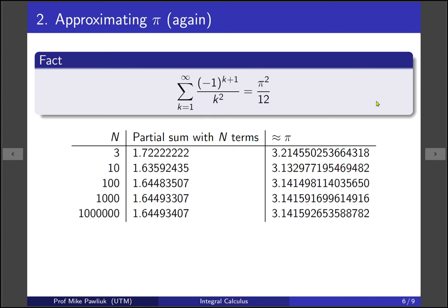So just like in the last case, we're going to list out various partial sums, so taking various amounts of terms. And then here's the partial sum, which is an approximation to pi squared over 12. And then by multiplying by 12 and taking the square root, we get an approximation to pi.